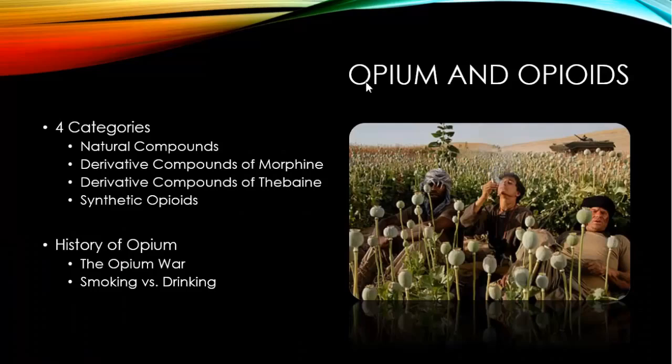The second category comprises derivative compounds created by making specific changes in the chemical composition of morphine — examples are oxycodone and hydrocodone. The third category comprises derivative compounds created by making specific changes in the chemical composition of codeine and thebaine, with examples also including oxycodone and hydrocodone. Note that the controlled-release form of oxycodone is called OxyContin as opposed to the regular type, which is called Percocet.